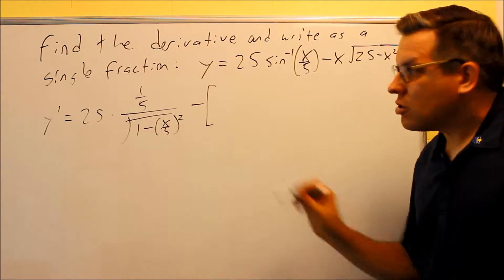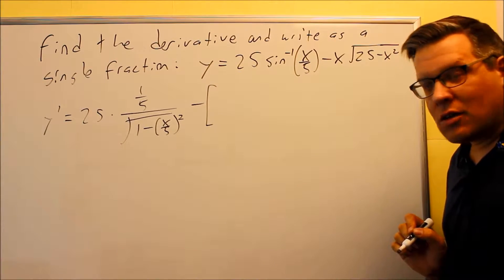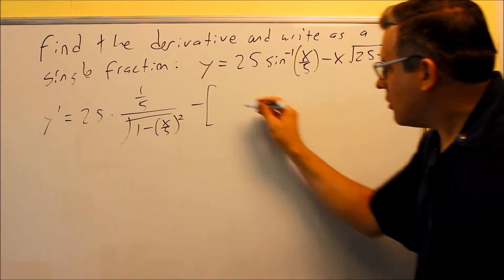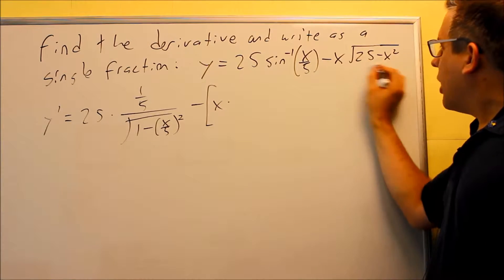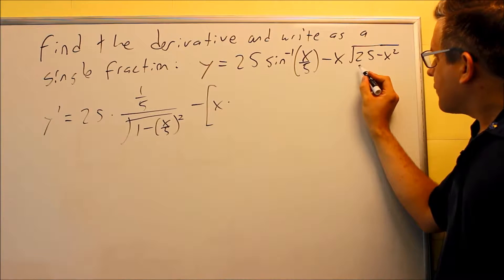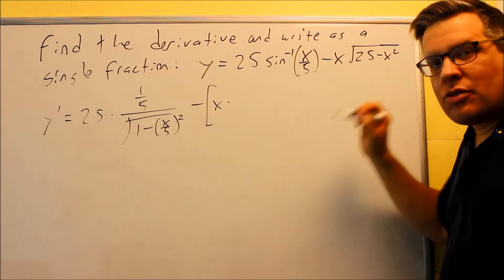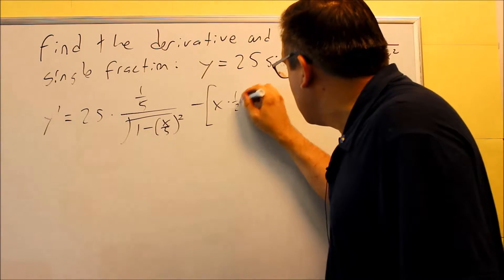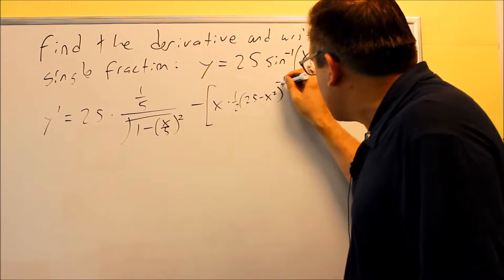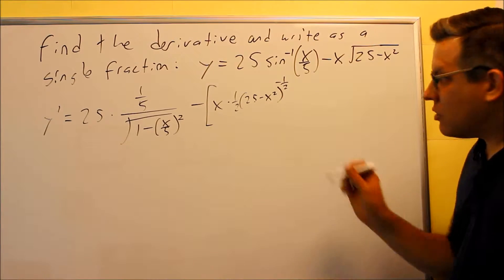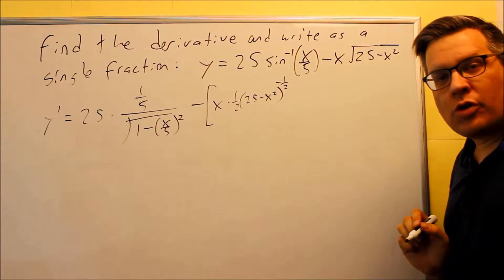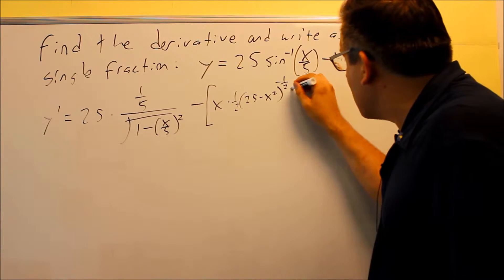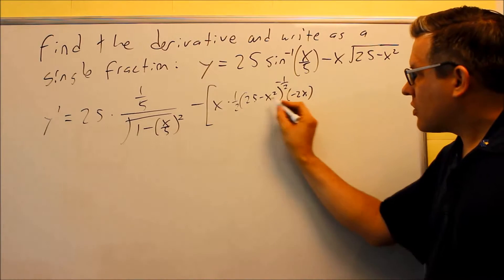Because we're doing the product rule and there's a minus sign out front, I need to put brackets here to make sure the negative gets distributed to everything inside. The product rule says you take the first thing times the derivative of the second. So we have x times the derivative of √(25 − x²), which can be written as (25 − x²) to the 1/2 power. Using the chain rule, the 1/2 comes down, we subtract 1 from the exponent, and then we multiply by the derivative of the inside. The derivative of 25 − x² is −2x by the power rule.